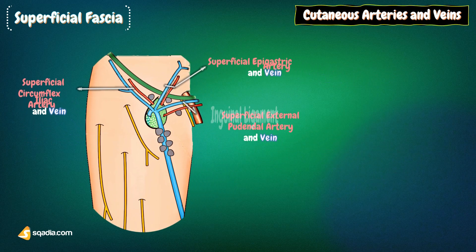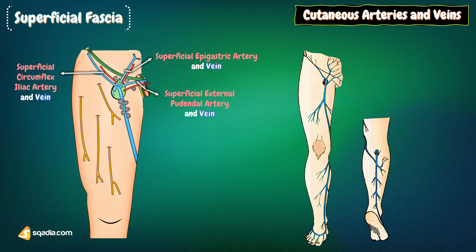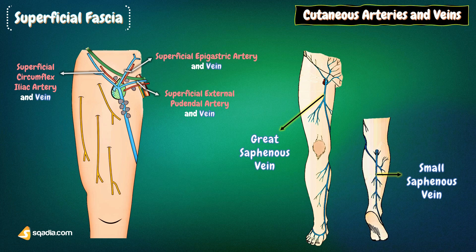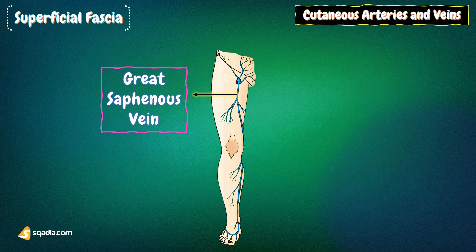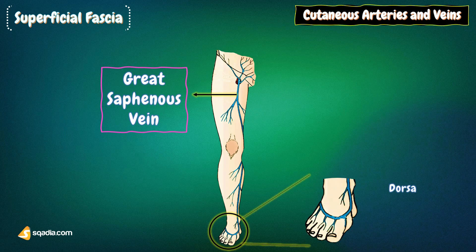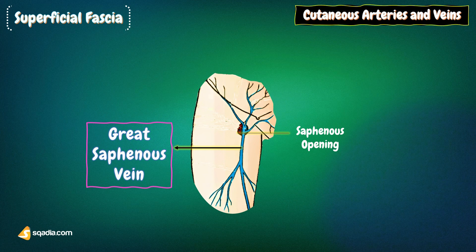The superficial veins of the lower limb are the great and small saphenous veins and their tributaries. They are comparable to the basilic and cephalic veins in the upper limb and have significant clinical importance. The great or long saphenous vein is the largest and longest superficial vein of the lower limb. It begins on the dorsum of the foot from the medial end of the dorsal venous arch, runs upwards in front of the medial malleolus, along the medial side of the leg, and behind the knee. In the thigh, it inclines forwards to reach the saphenous opening, where it pierces the cribriform fascia and opens into the femoral vein.